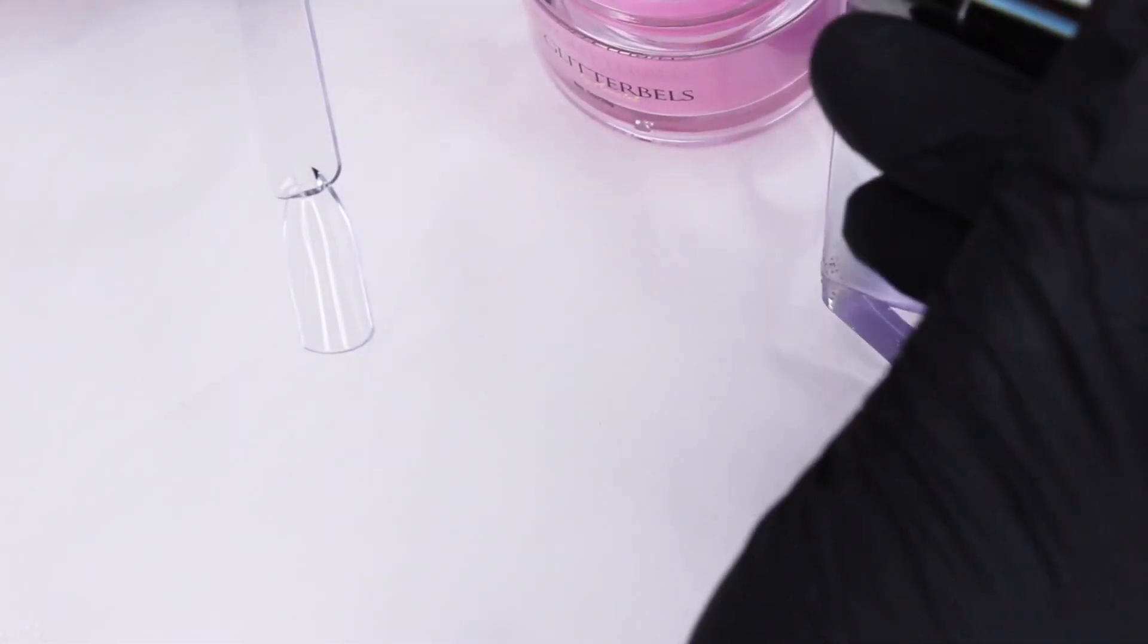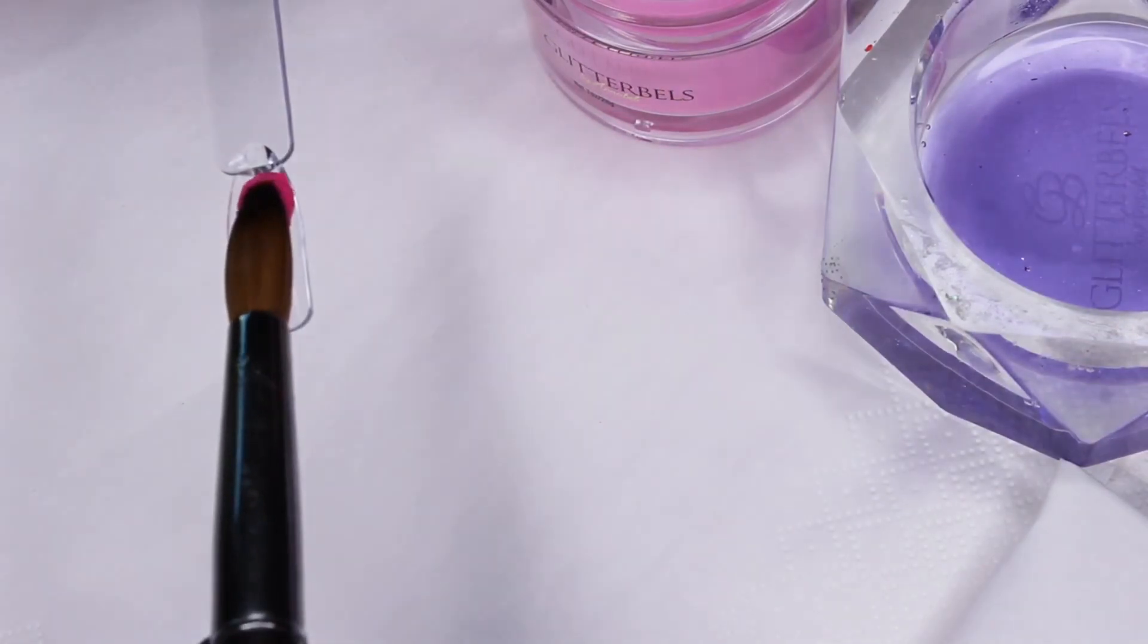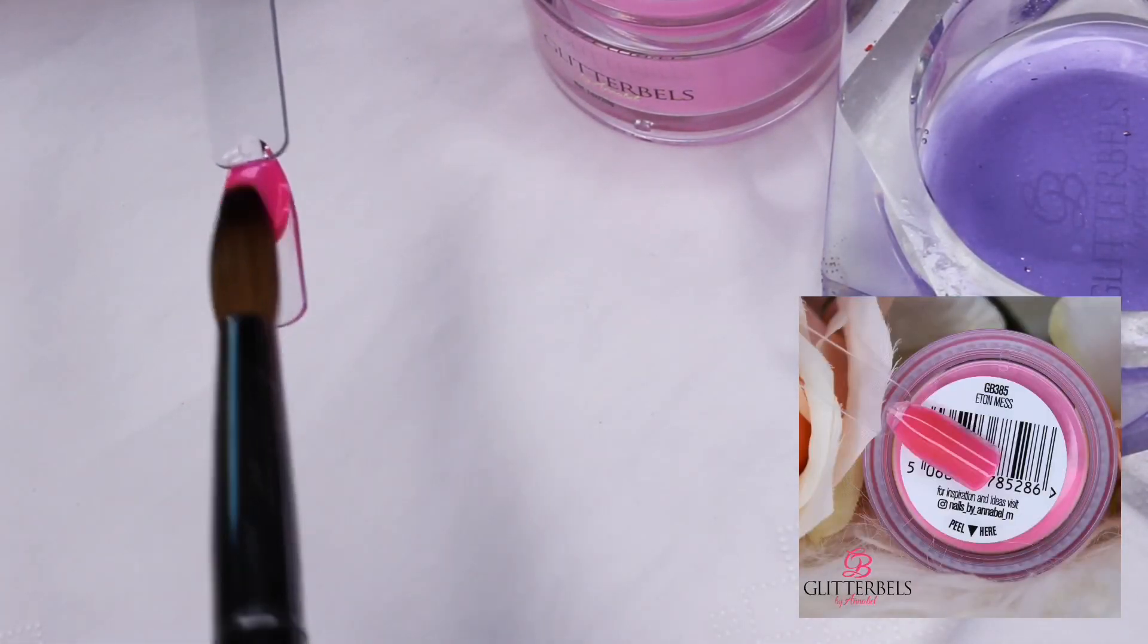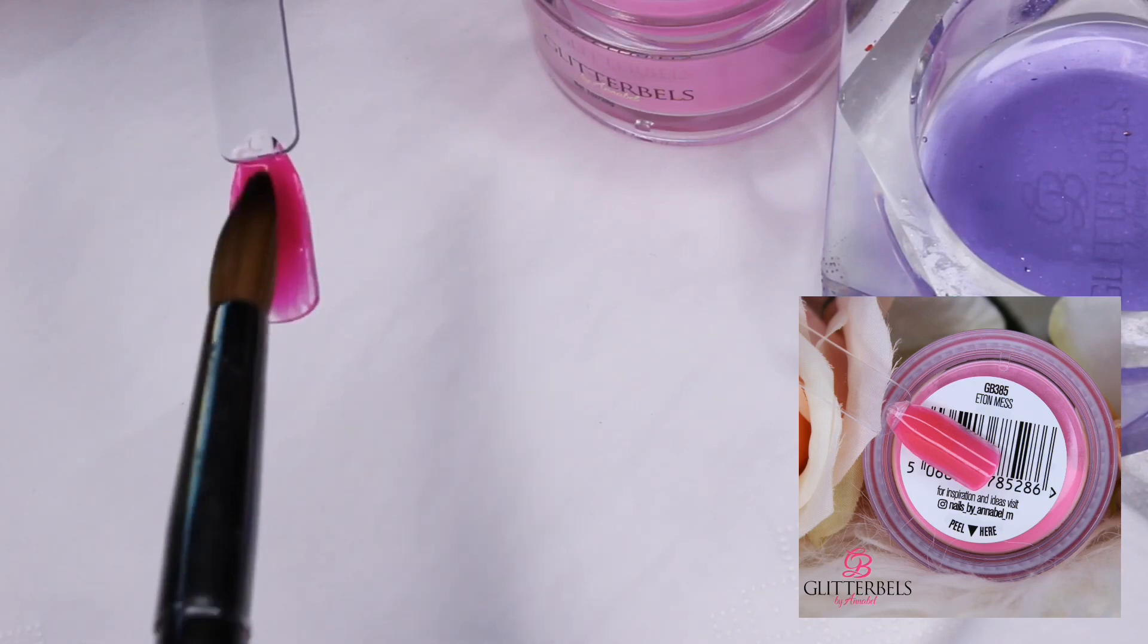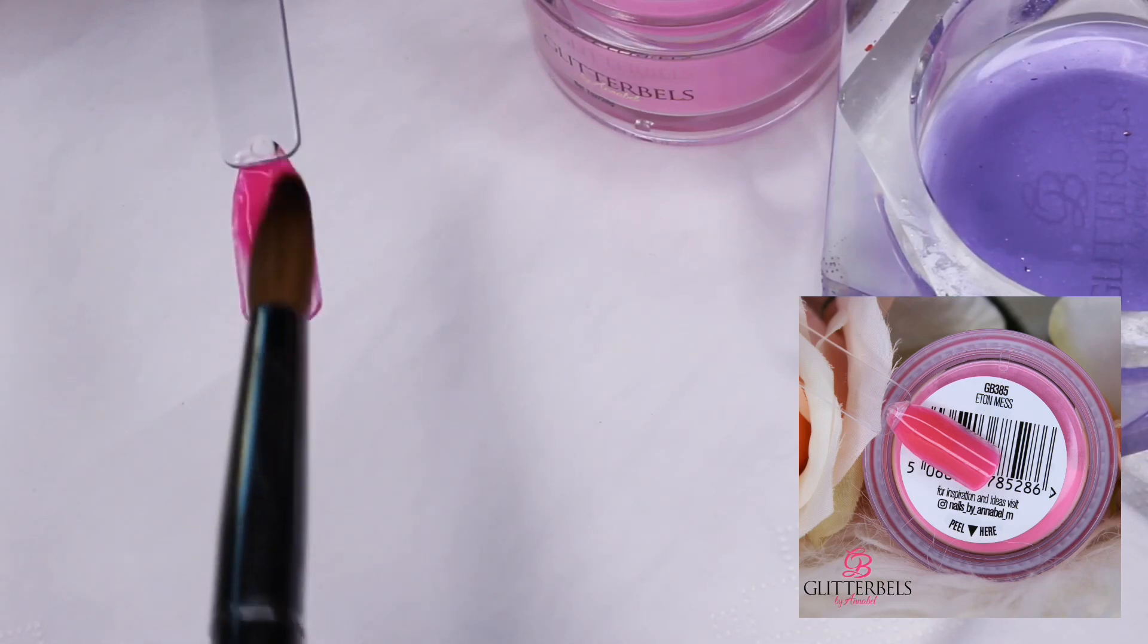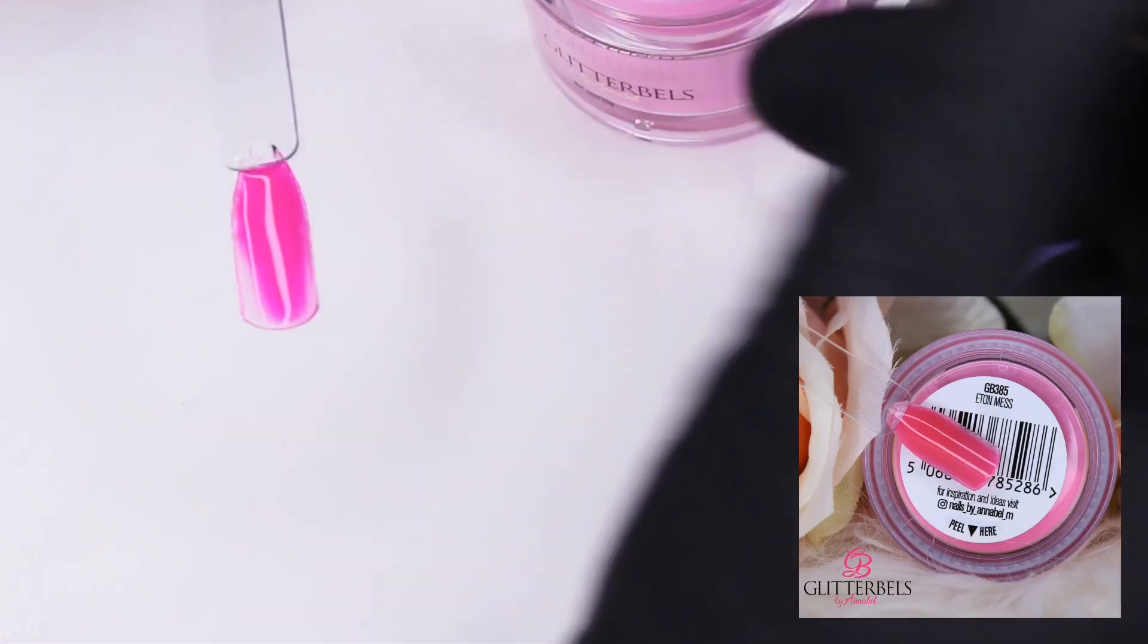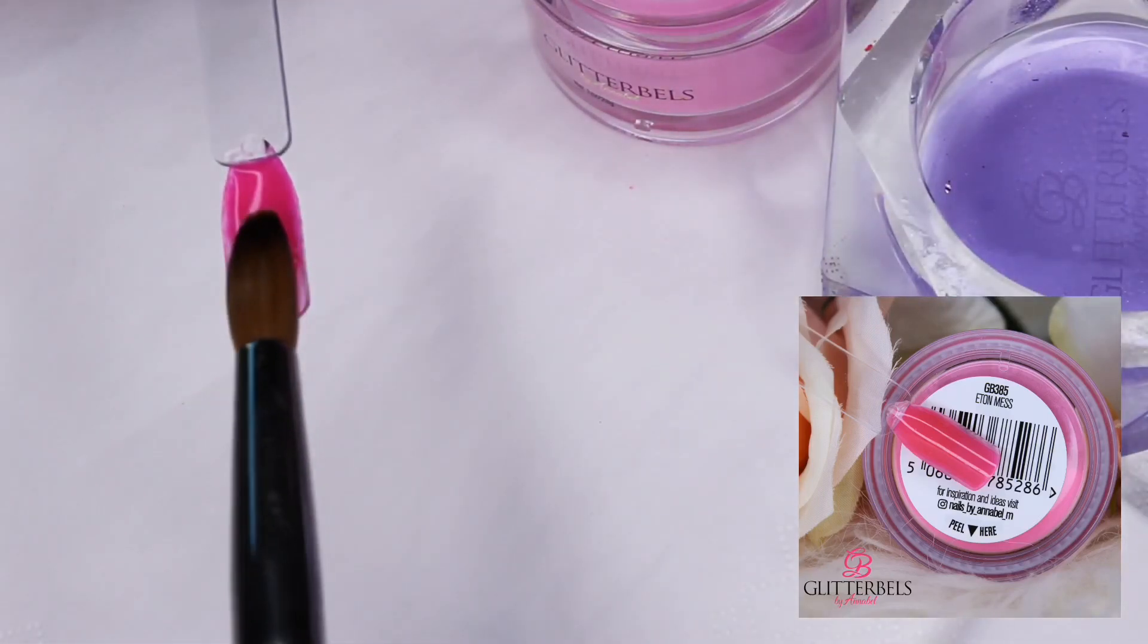May I present to you the most perfect Barbie pink of all the Barbie pinks—it's called Eat and Miss. It's a beautiful medium bright pink, plain color, no shimmer, no sparkle, and it's just adorable if you ask me.